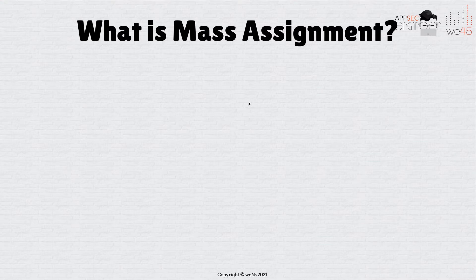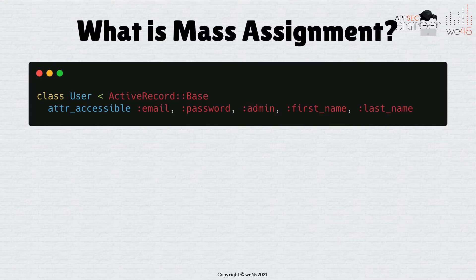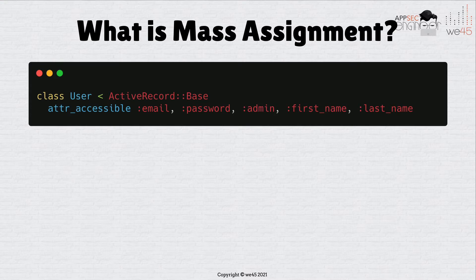Let's talk about how this works. We have a class called User with attributes: email, password, admin, first name, and last name. This user is going to sign up to your system, but that user should not be able to set the admin parameter. The user should not be able to declare themselves as admin when signing up — that's obviously a huge red flag and a massive authorization issue.